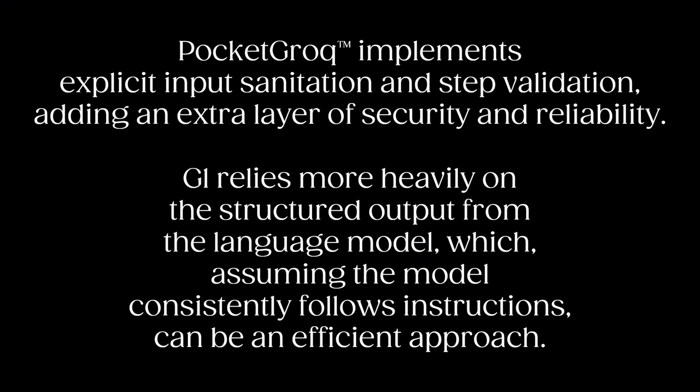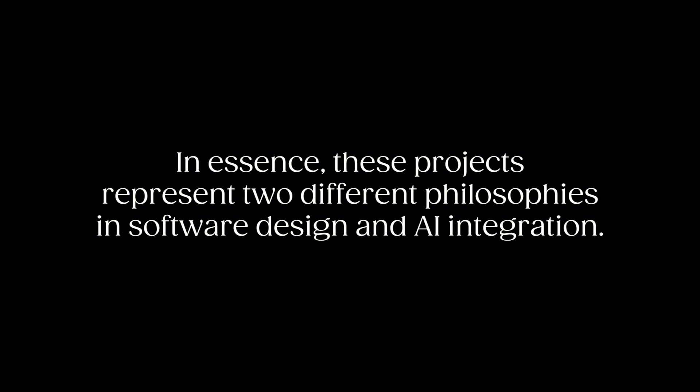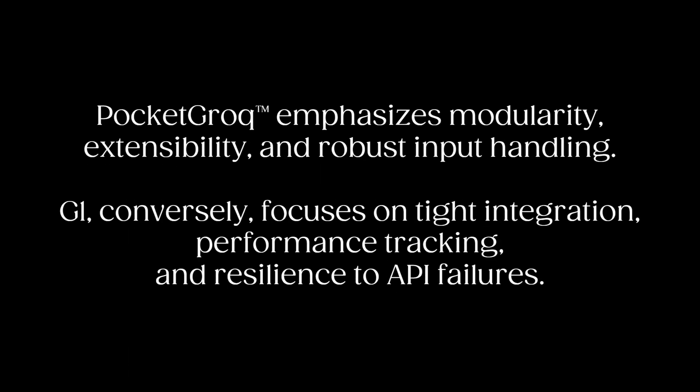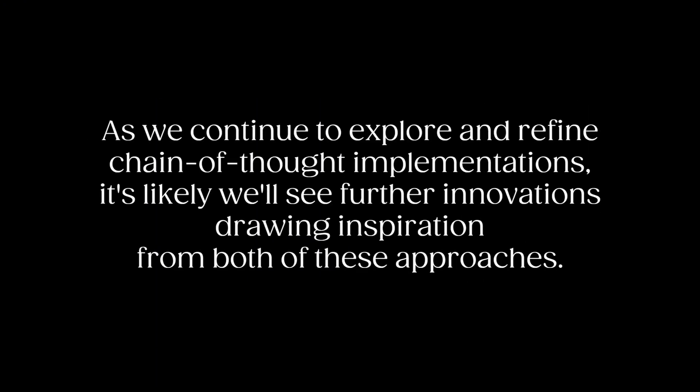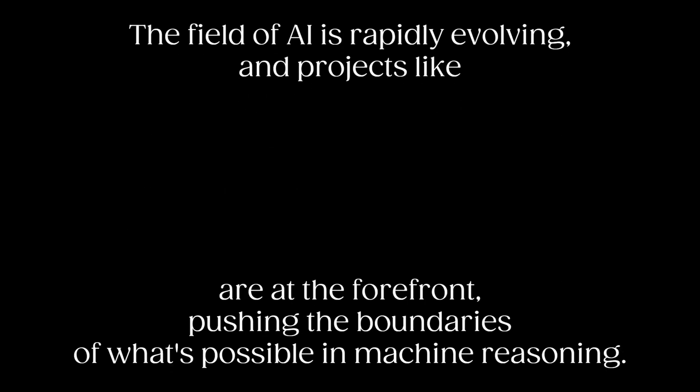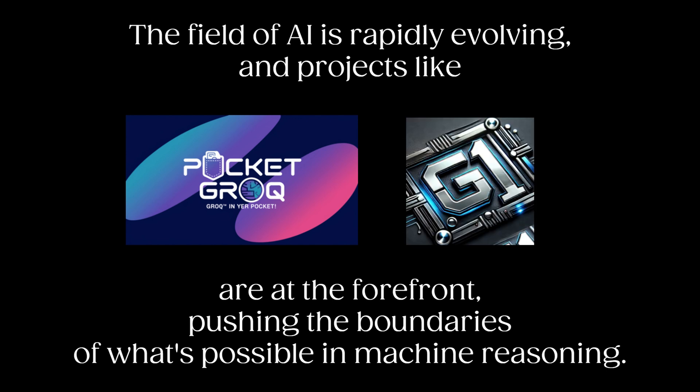Both projects showcase interesting approaches to input handling. Pocket Grok implements explicit input sanitation and step validation, adding an extra layer of security and reliability. G1 relies more heavily on the structured output from the language model, which, assuming the model consistently follows instructions, can be an efficient approach. In essence, these projects represent two different philosophies: Pocket Grok emphasizes modularity, extensibility, and robust input handling, while G1 focuses on tight integration, performance tracking, and resilience to API failures. As we continue to explore chain-of-thought implementations, it's likely we'll see further innovations drawing from both approaches, as the field of AI is rapidly evolving.